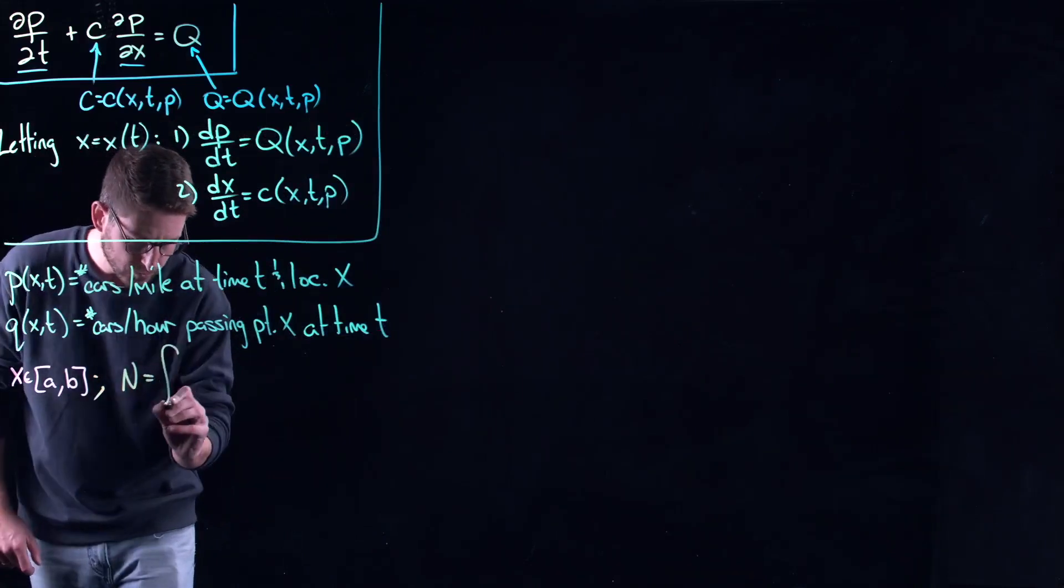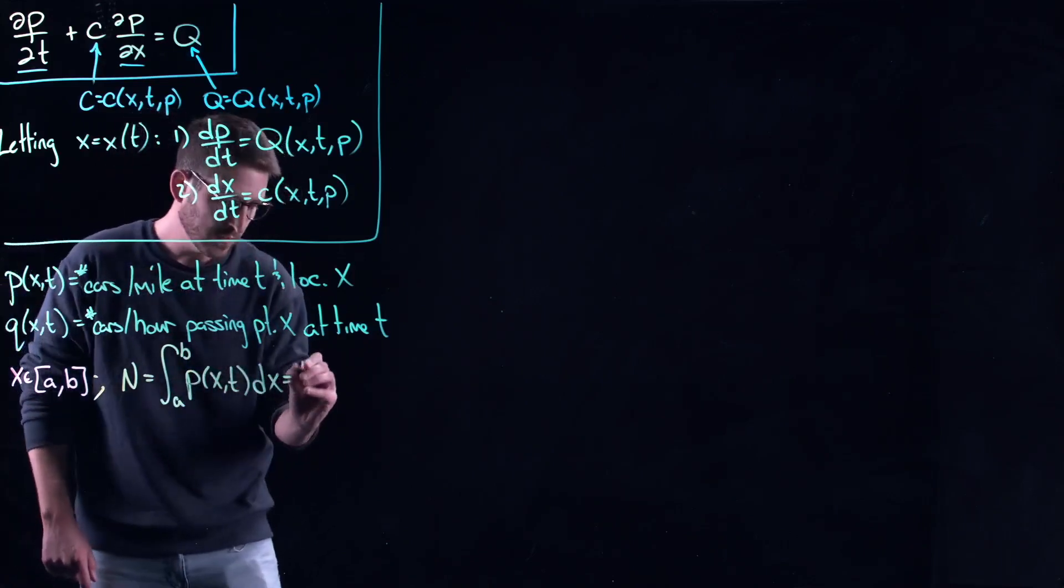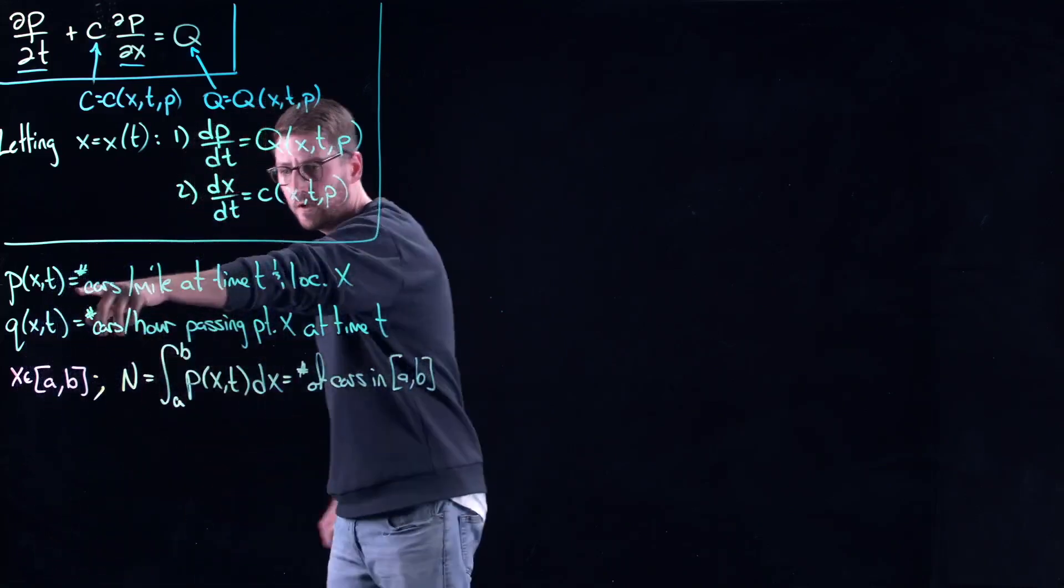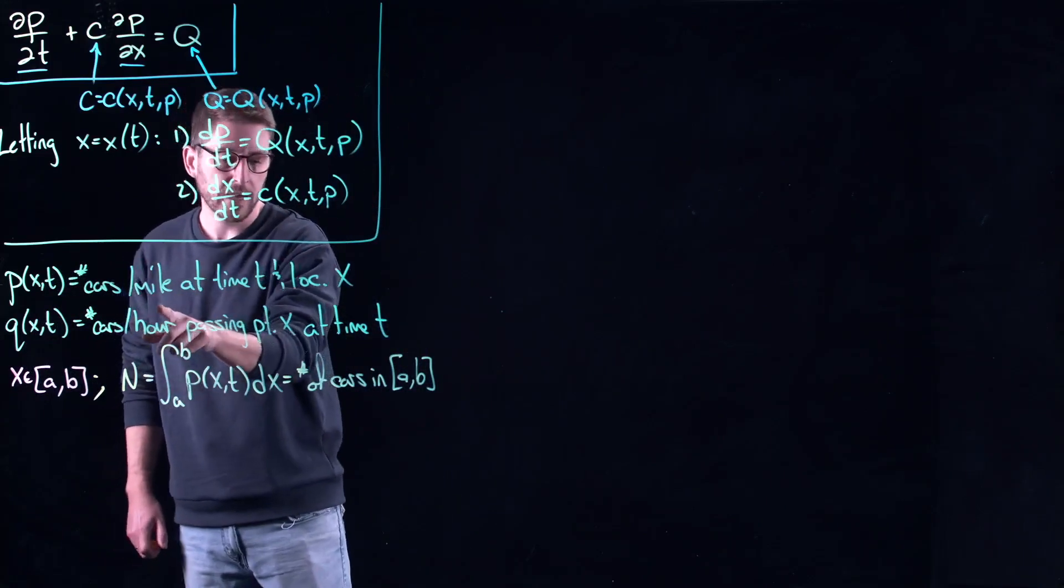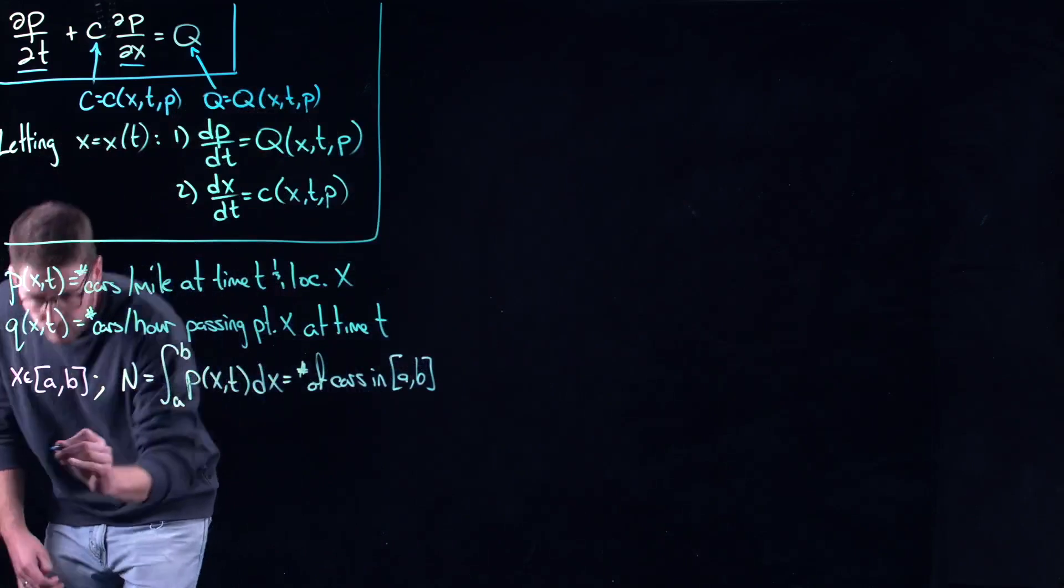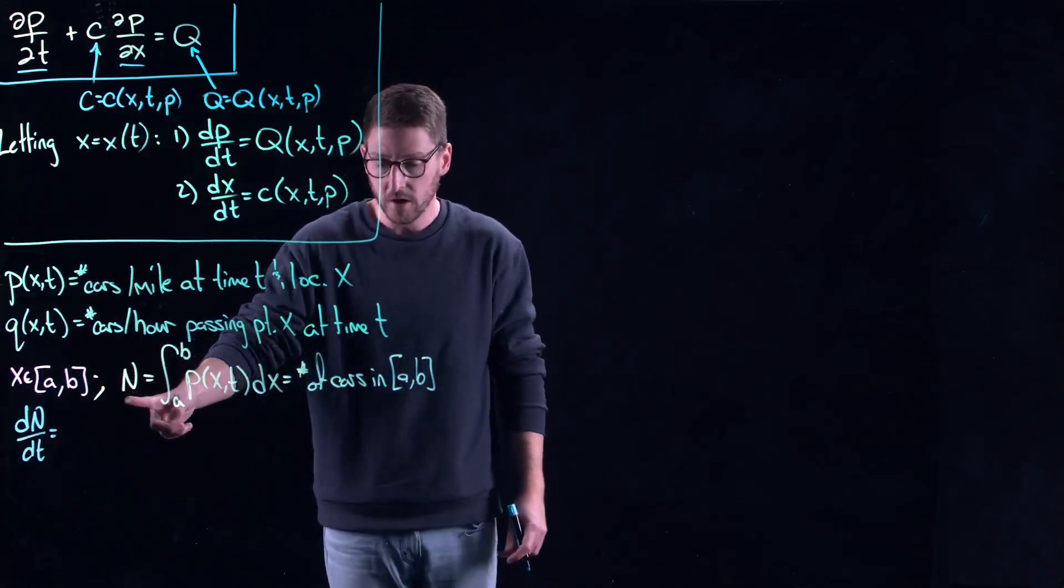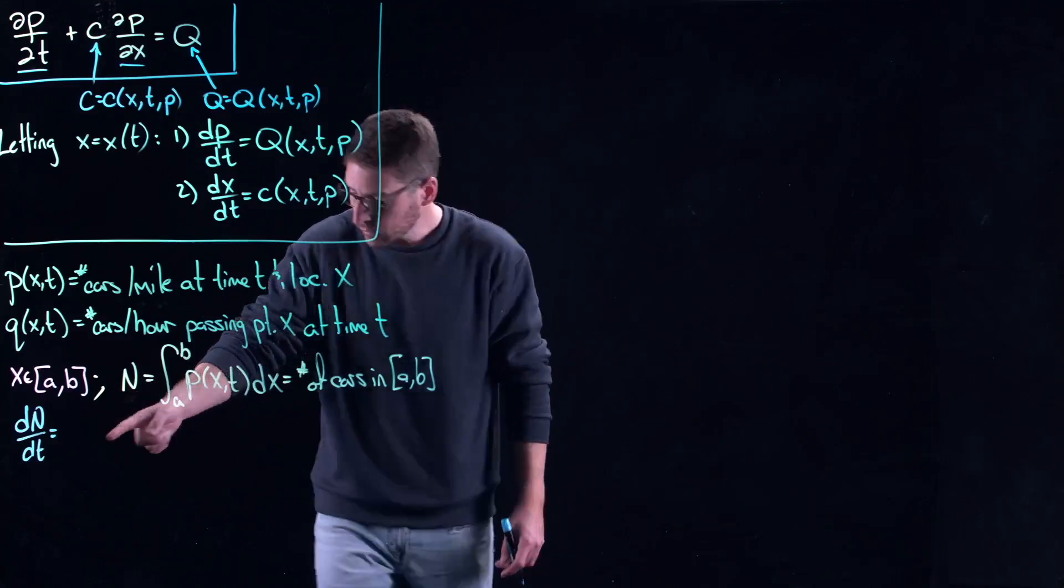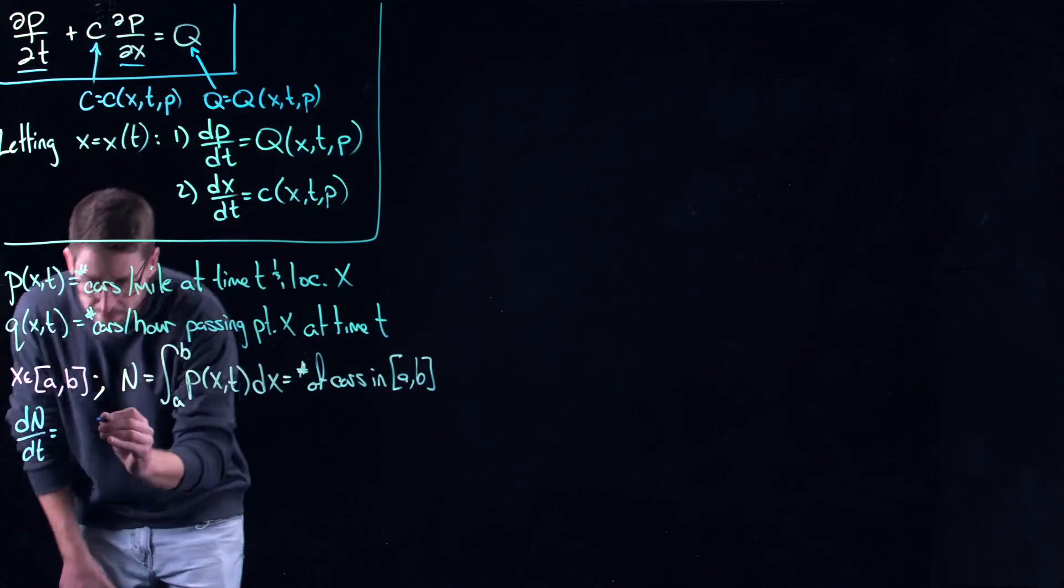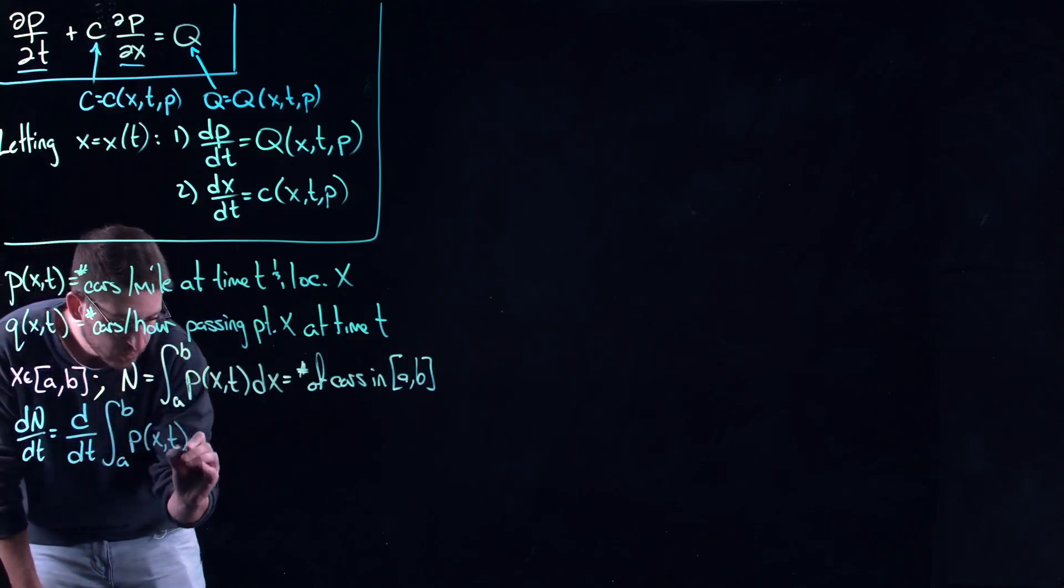Then what we would do is define a quantity. We would say let N equal to the integral over space of p, which is just equal to the number of cars in this sort of strip of road from A to B. This is the number of cars per mile, so multiply by x summing over all of the possible x's. Then what we could do is look at the differential of this quantity, the number of cars. This is just a function of time now. It's the number of cars on the road at each point in time. So this would be the rate of change of the number of cars. Is it going up or is it going down? More cars on the highway, less cars on the highway.